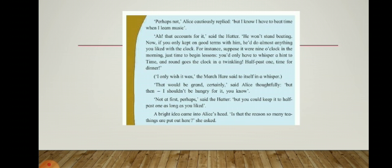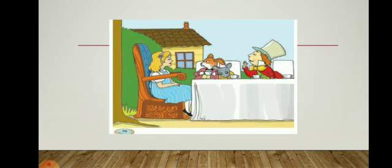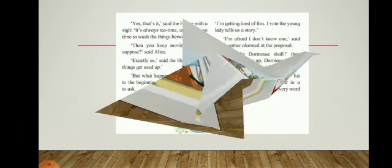A bright idea came into Alice's head. 'Is that the reason so many tea things are put out here?' she asked. Here you can see Alice sitting on a big armchair, and you can see the Dormouse, March Hare, and Mad Hatter. Now we will move to the last page of this lesson, page number 91.